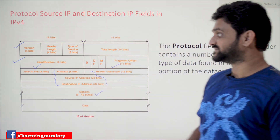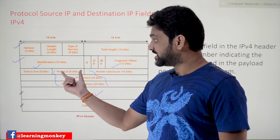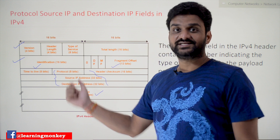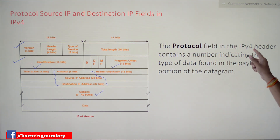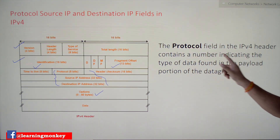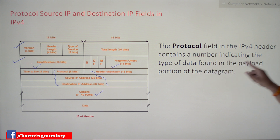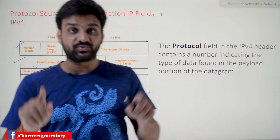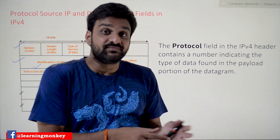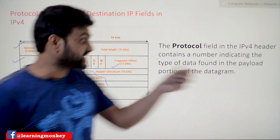The protocol field is an 8-bit header field. It contains a number indicating the type of data found in the payload portion of the datagram — that is, what kind of data is present in the payload is represented by this field.